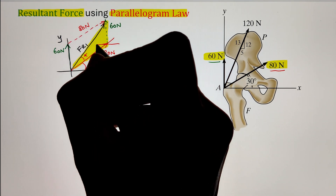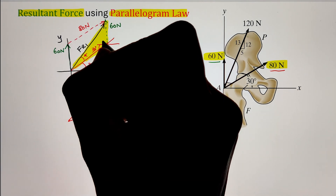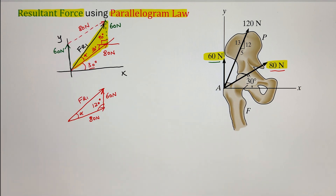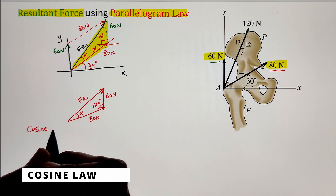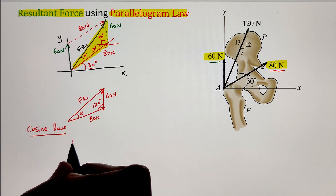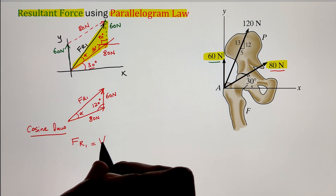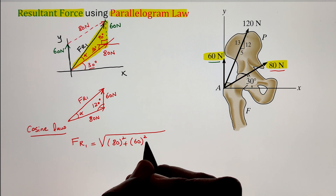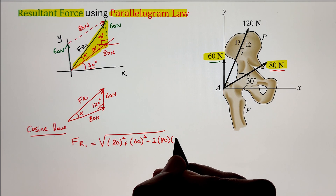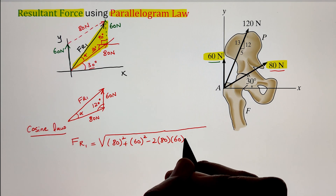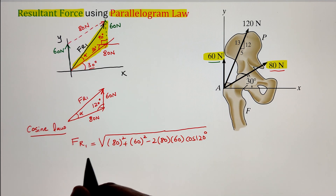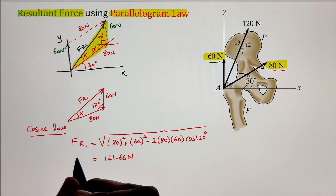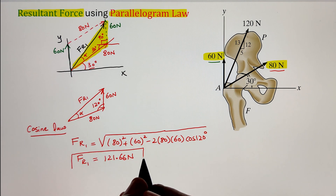Since the 80 Newton force is making a 30 degree angle from the horizontal axis, that can be reflected along the internal angles at its head. Since the 60 Newton force is making 90 degrees from the horizontal, the combination of these gives us an internal angle between the 80 Newton and 60 Newton forces of 120 degrees. Once we have the internal angles, we can apply the cosine law: Fr1 equals the square root of 80 squared plus 60 squared minus 2 times 80 times 60 times cosine of 120 degrees. Simplifying, we get a resultant force of 121.66 Newton.